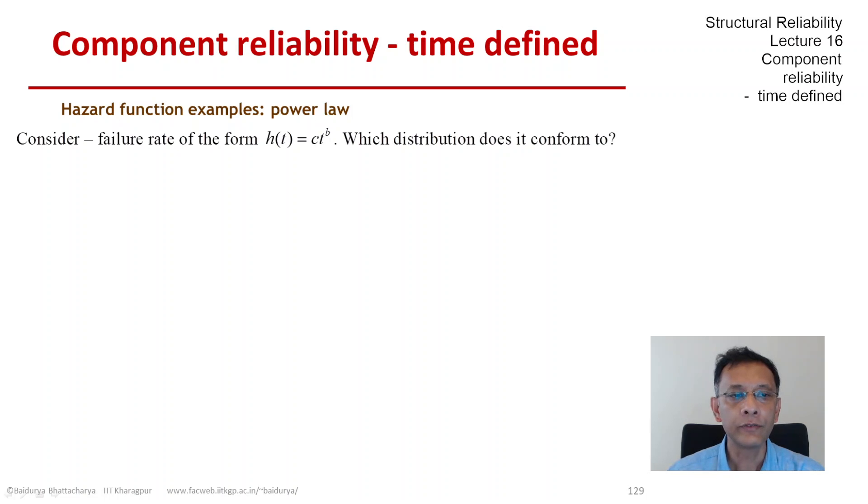So h(t) is simply c times t to the power of b, where c and b are two constants. What possible shapes can h take, and which distribution does this hazard function conform to?